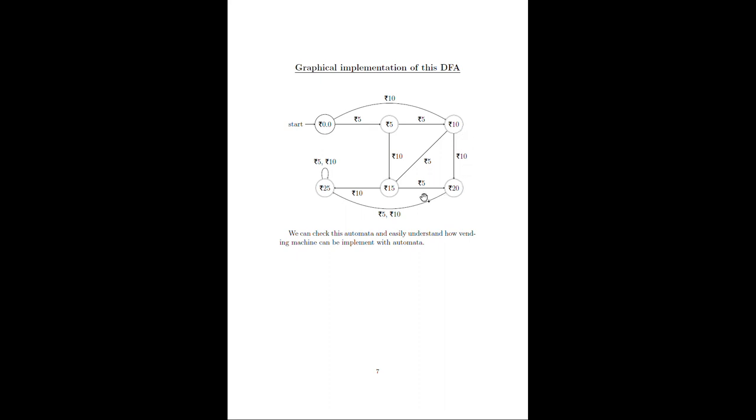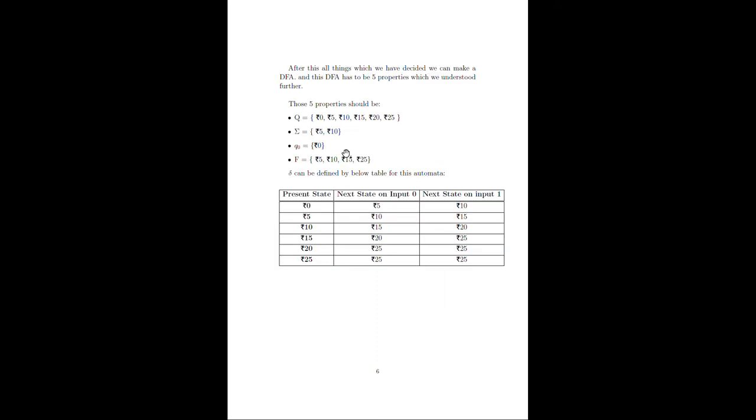The last state is rupees 25. After rupees 25, if we give 5 rupees or 10 rupees it will move on and the remaining money will be returned to the user. You can check this DFA from this graph and this table and these properties. Thank you.